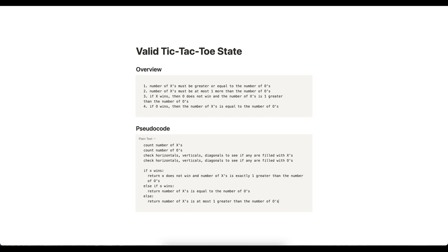In terms of time and space complexity — since this is a fixed three by three board — counting X's and O's and checking horizontals, verticals, and diagonals are all constant time operations. So the time complexity is O(1) and the space complexity is O(1). Let's implement this in Java.